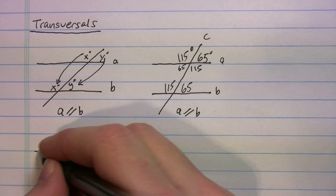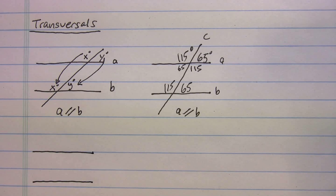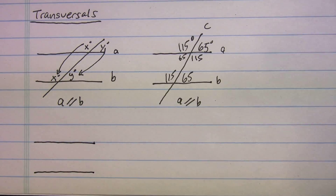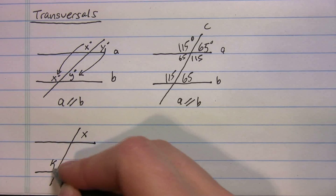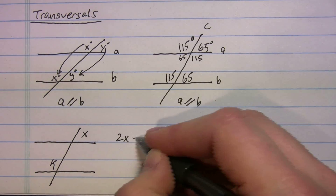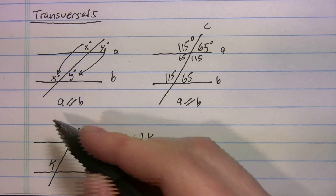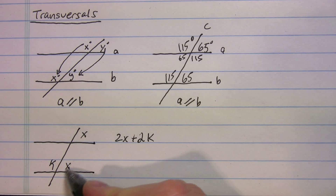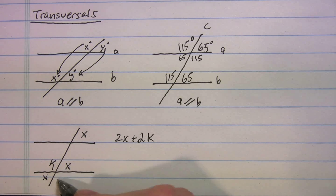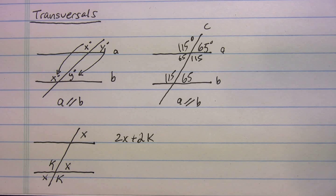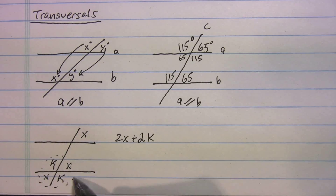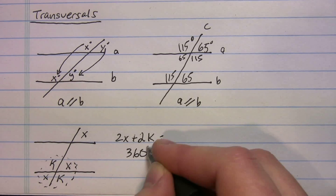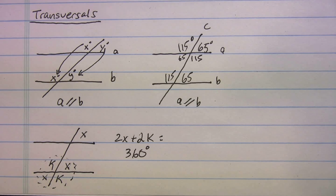A more variable-based example: say the transversal creates angle x at the top parallel line and angle k at the bottom intersection. You can slide x down to its corresponding spot. Using vertical angles, you get two x's and two k's around the intersections. So 2x plus 2k equals 360 degrees — that's a question closer to what you'd see on the SAT.